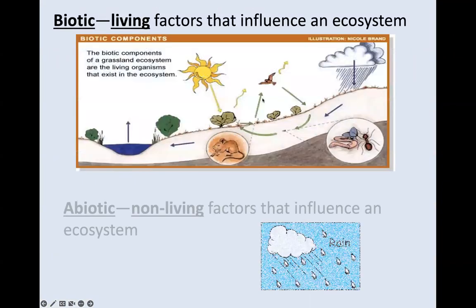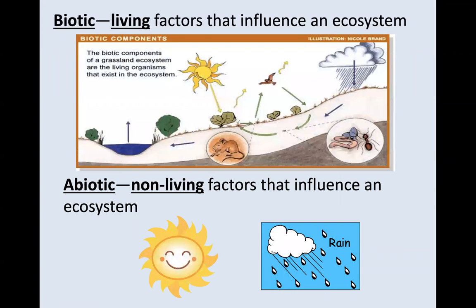When we consider how organisms interact with their environment, we want to use the terms biotic and abiotic factors. Biotic factors are the living factors that influence an ecosystem, while abiotic factors are the non-living factors that also influence an ecosystem. Biotic components include things like organisms, plants, and animals. Examples of abiotic factors are the sun, the atmosphere, and rain. These are all factors that influence organisms and their environment.